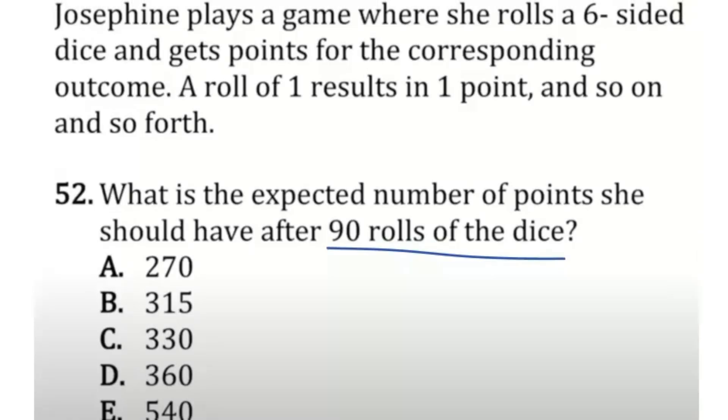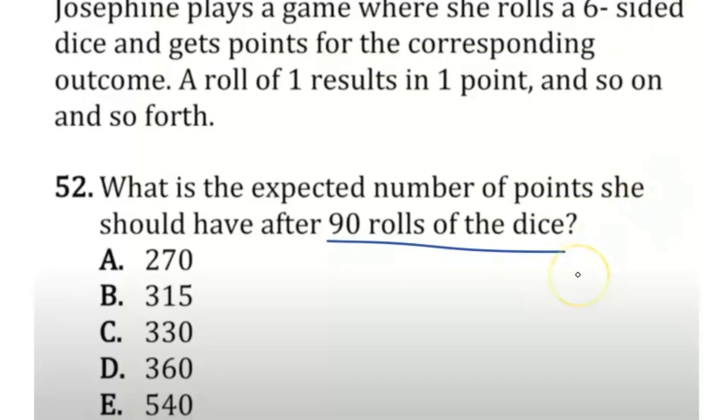So to find the expected value per roll, what you would do is multiply the probability of each event or getting each side. Because this is a fair dice, we're going to assume the probability of rolling a one is one-sixth, rolling a two is one-sixth, and so on. And then you would multiply that probability by each of the values. So if I roll the one, that'd be one point and so on. Now, there is an easier way to do this instead of doing that manual calculation.